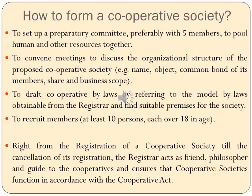To form a cooperative society, a preparatory committee of preferably five members should be set up, with the pooled human and other resources required. They have to convene meetings to discuss the organization structure — name, object, common bond of members, shares and business scope — and draft cooperative bylaws by referring to model bylaws from the registrar. They have to recruit at least 10 members above the age of 18. From registration till cancellation of registration, the registrar acts as friend, philosopher and guide to the cooperative society, ensuring it functions in accordance with the Cooperative Societies Act.